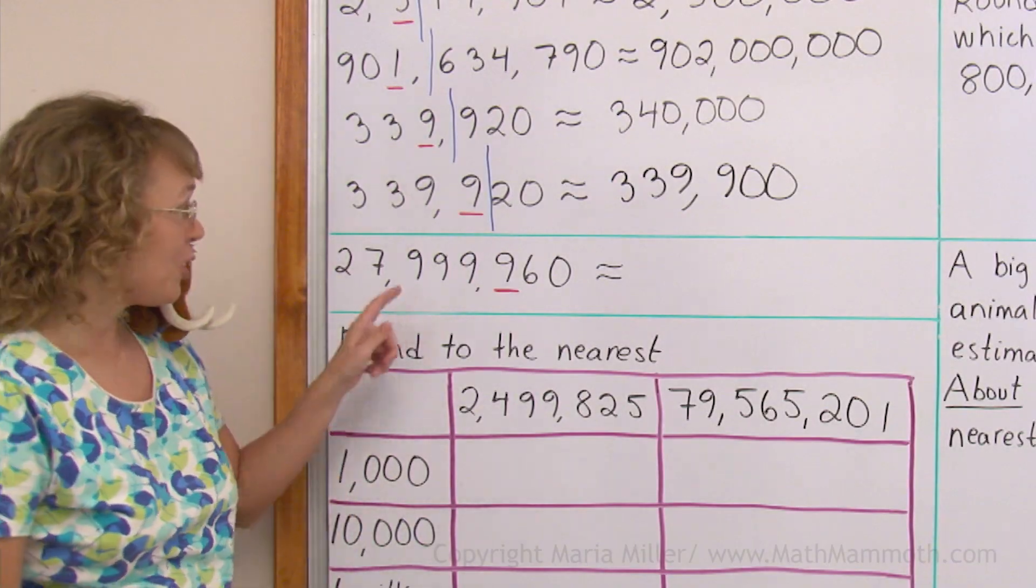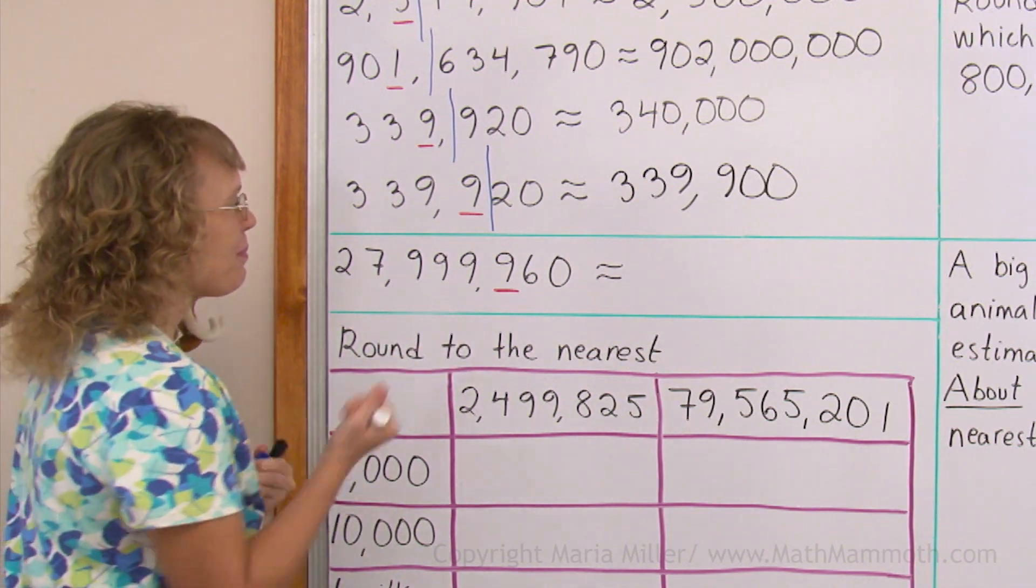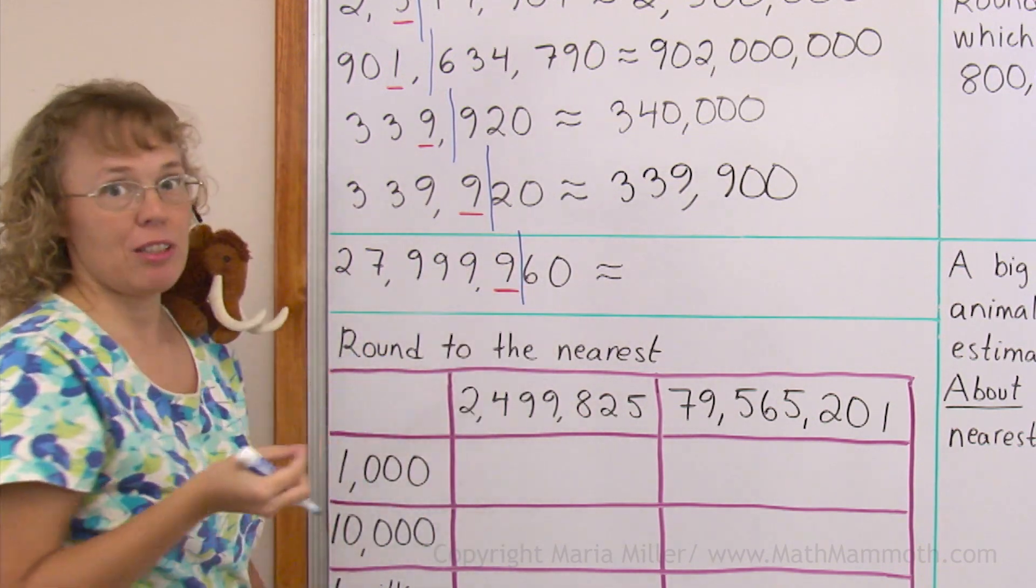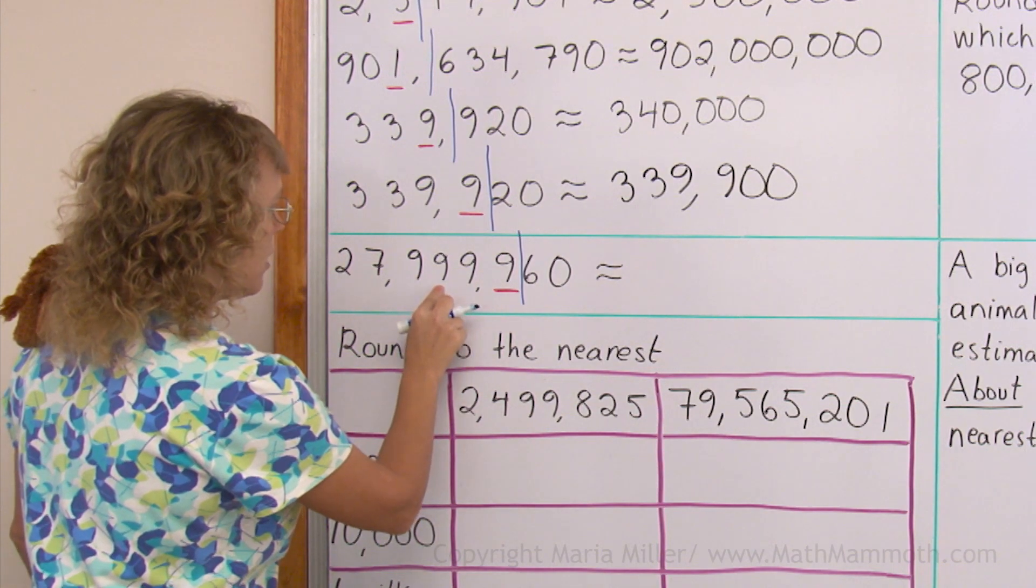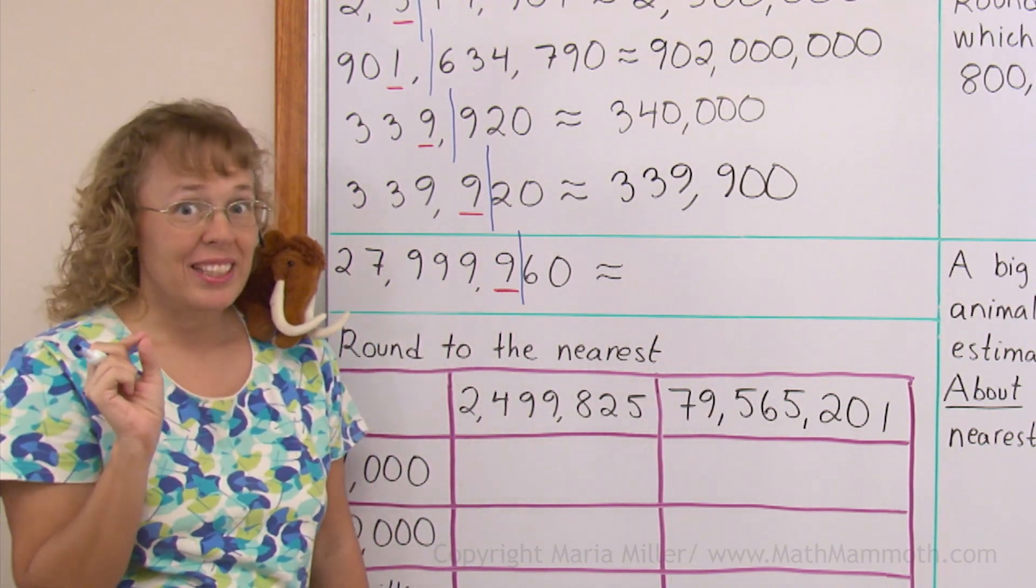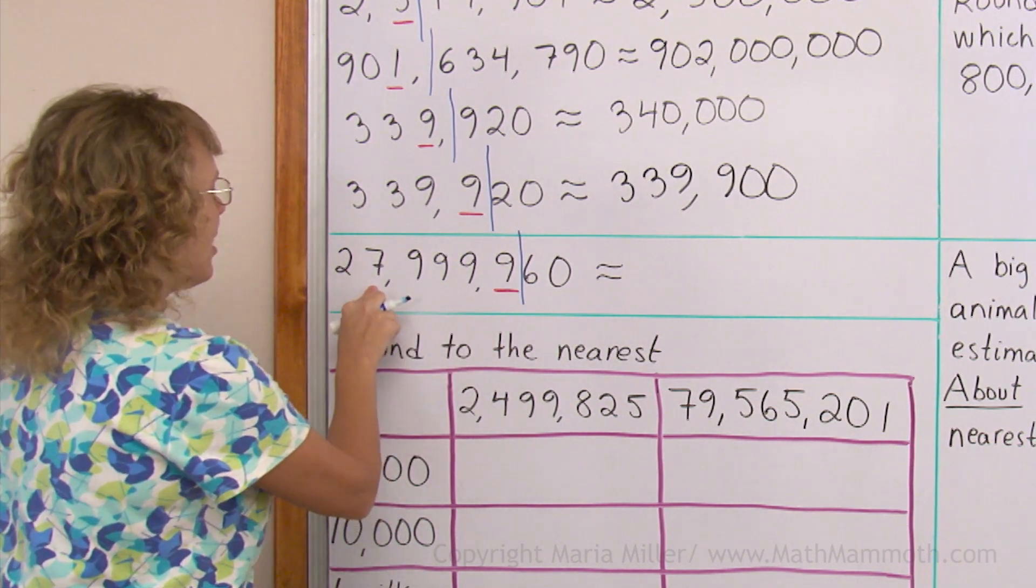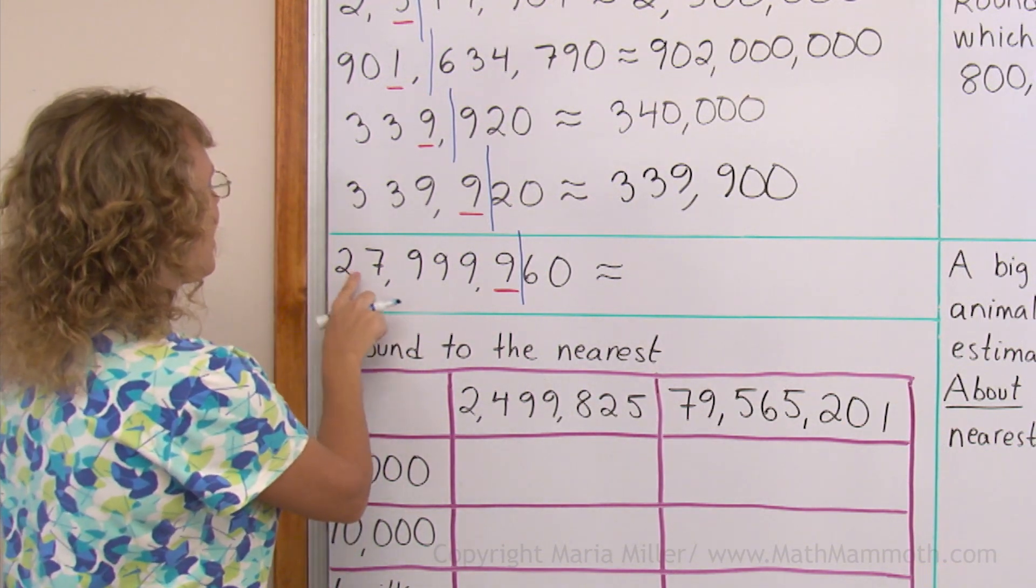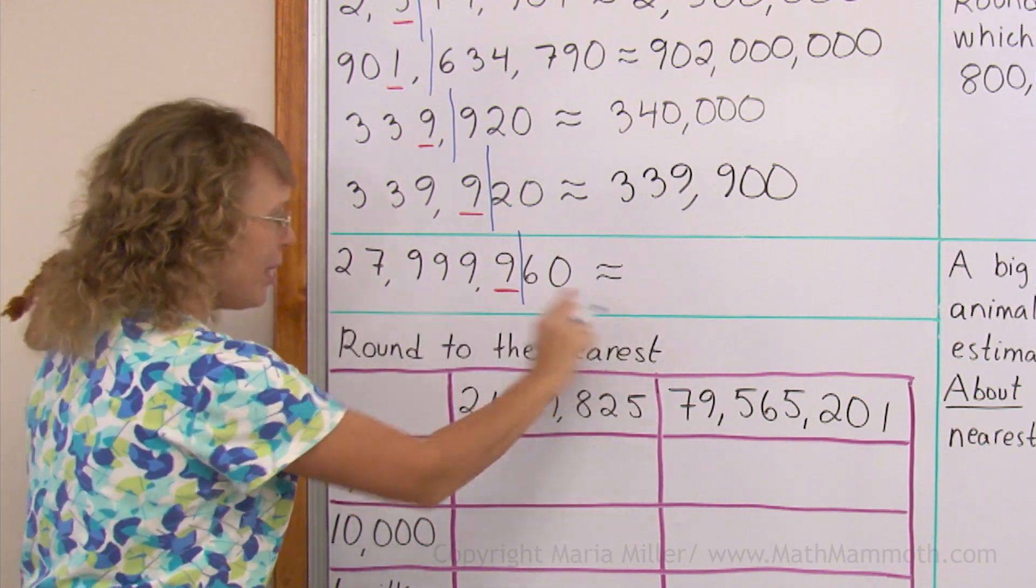In this number we have super many nines. Let's see what happens. Here's 6. It means we round up. But here's a 9 and here's a 9 and here's a 9 and here's a 9. So, what you will do in this case is you will go backwards all the way up to this 7 and increase that by 1 to 8. So we actually get 28 and then all of this will be zeros, 28 million.